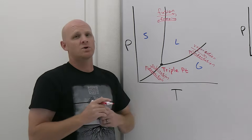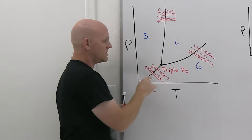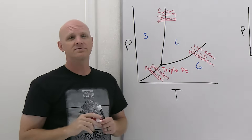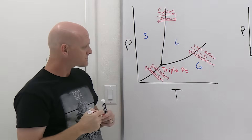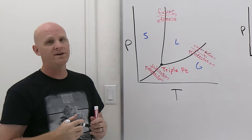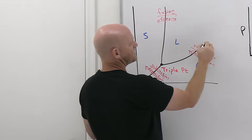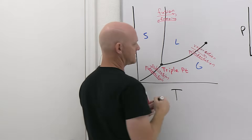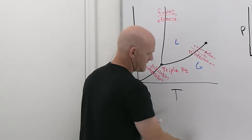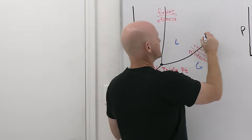Sometimes you get a question that gives you a phase diagram with one of these six arrows and asks you to identify which phase change it corresponds to. We've also got one other special point on this curve, right at the end of the liquid-gas line of equilibrium, and we call this the critical point.